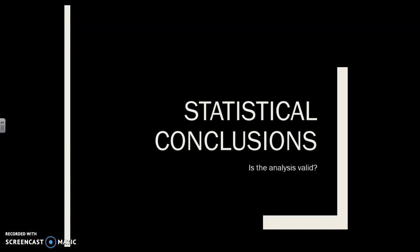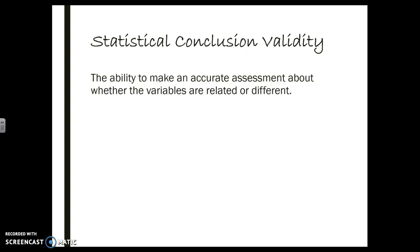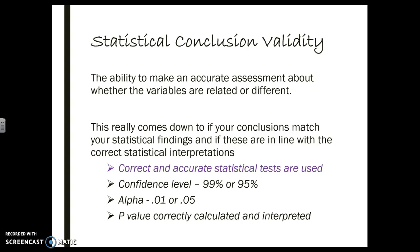The last thing to mention is statistical validity, or statistical conclusions. The question here is: is the analysis valid? We're doing some kind of inferential statistic, and are we making accurate assessments about the variables and how they're related or different from each other? This comes down to using the correct statistical test — if you're talking about correlation and then you run a chi-square, that's not valid. You need the correct test, the right confidence level — is 95% okay or do you need 99%? — and that determines your alpha, which determines the p-value and how you correctly interpret it. If you get a p-value of 0.07 and you're calling that significant, that's a problem.